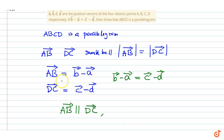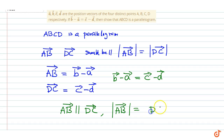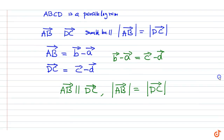And the magnitude of vector AB equals the magnitude of vector DC. This follows from the given equation. Similarly, we can prove that vector BC and vector AD are parallel and equal in magnitude.